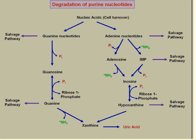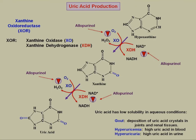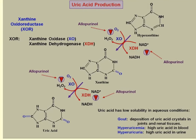Uric acid is one of the forms of nitrogenous waste that we can excrete via the kidneys. Uric acid is produced from hypoxanthine and xanthine, and the first step is catalyzed by the enzyme xanthine oxidoreductase.